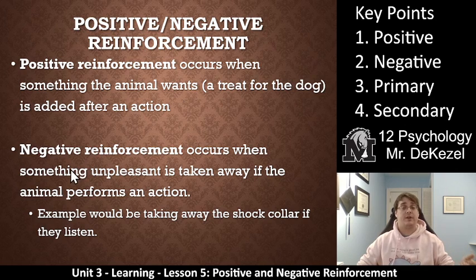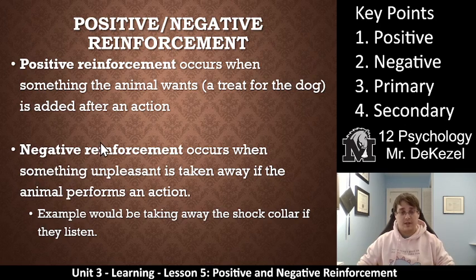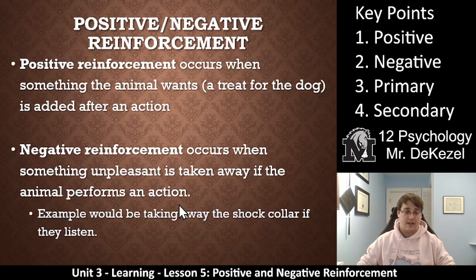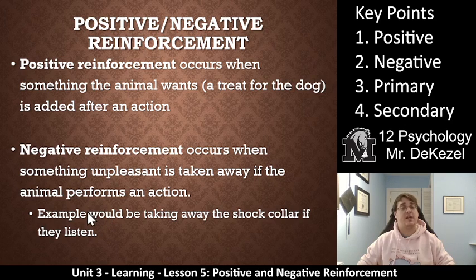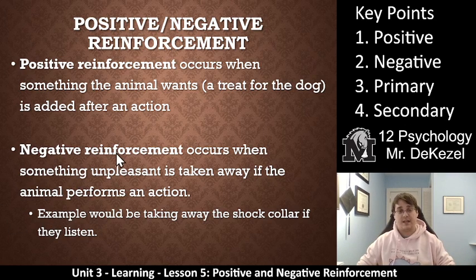Negative reinforcement occurs when something unpleasant is taken away — you're taking away something bad. An example of this would be to take away a shock collar if they listen. So let's say your dog is wearing a shock collar; if they agree to shake your paw, then you take that shock collar away. You're taking away something unpleasant — that's negative reinforcement.